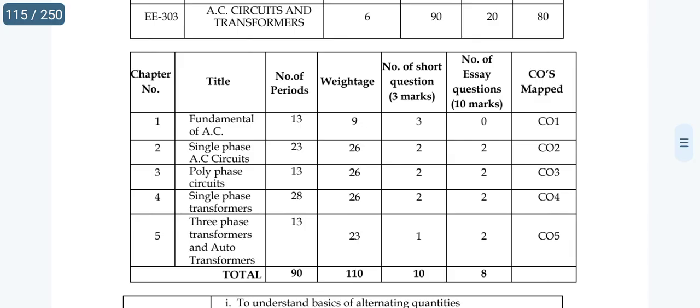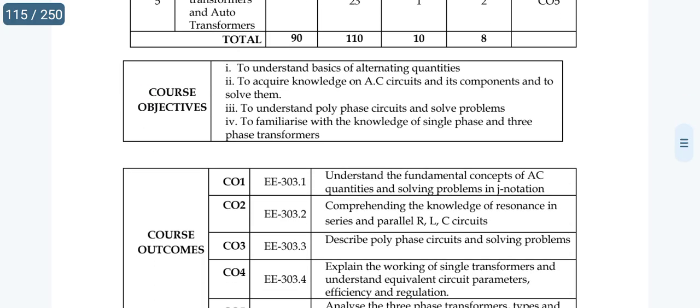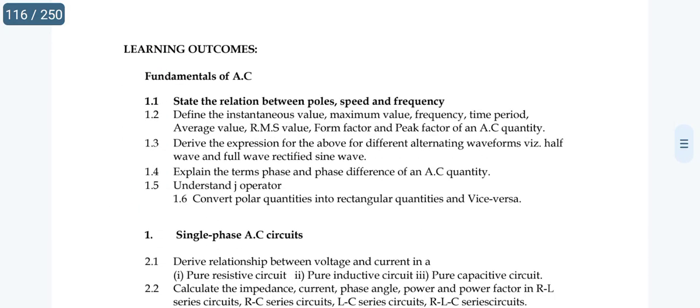For unit 1 — Fundamentals of AC — there are 3 short answer questions. There is no SI; the remaining units 2, 3, 4, and 5 have 2 short answers each. There are no big questions for unit 1.